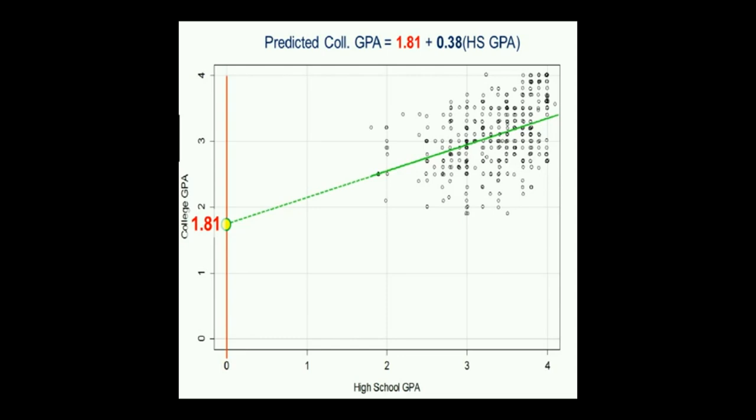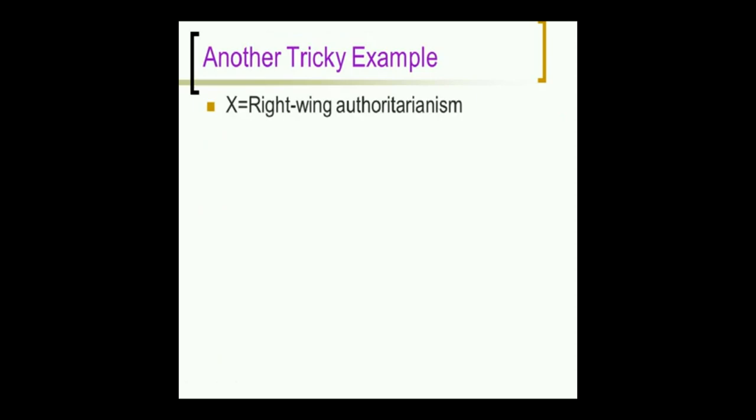So that's one example of interpreting a 0 point. You have to remember that in this case, nobody actually got 0. So it might not make much sense for you to say, if you have a 0 GPA in high school, you can't graduate from high school if you have a 0 GPA. Plus, there's so much empty space here with no data in it, you start to really wonder, is the line really going to continue? But I don't think it's possible to graduate from high school if you have a 0 GPA.